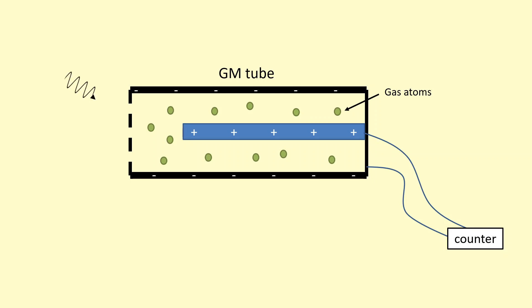When ionizing radiation, for example this gamma wave, enters the GM tube, it ionizes the atom. So the electrons go towards the positive, and the positive ions go towards the negative, and this creates a pulse.